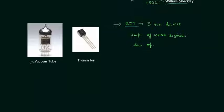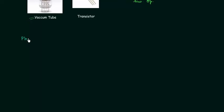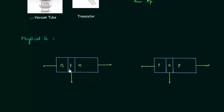The next thing is the physical structure of BJT. We have two types of BJT. The first type is the NPN transistor and the second type is the PNP transistor. In case of NPN transistor, P-type semiconductor material is sandwiched between two N-type semiconductor materials. In case of PNP transistor, N-type semiconductor material is sandwiched between two P-type semiconductor materials.